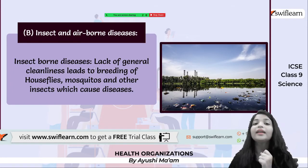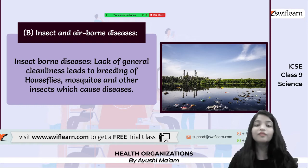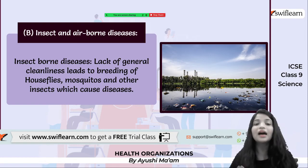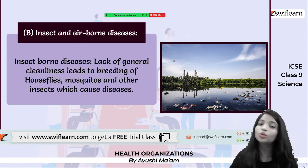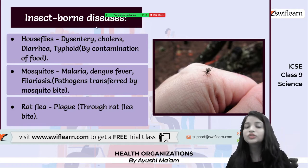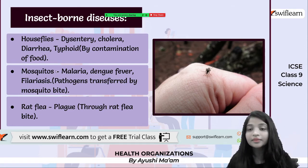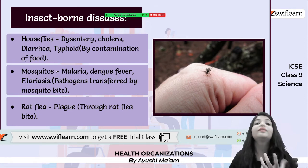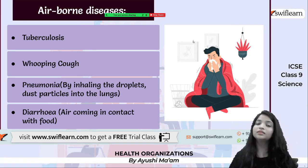Then we have insect-borne and airborne diseases. Insects are very simple — if you are not keeping your surroundings clean, mosquitoes start breeding there. Mosquitoes are just the transmitter of diseases from one place to another, from one person to a healthy person. With house flies we can have cholera and diarrhea. With mosquitoes we can have malaria, specifically from the Anopheles mosquito. We can have dengue, and with rat flea we can have plague. So through insects we are having all these diseases.